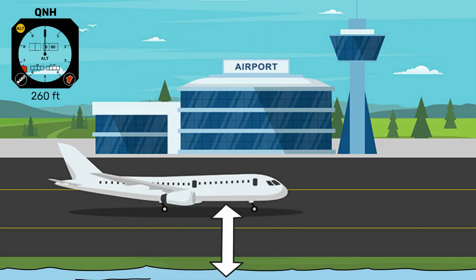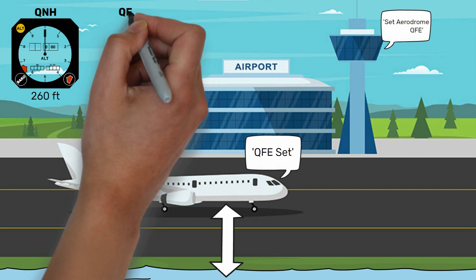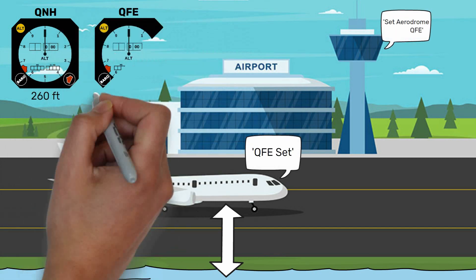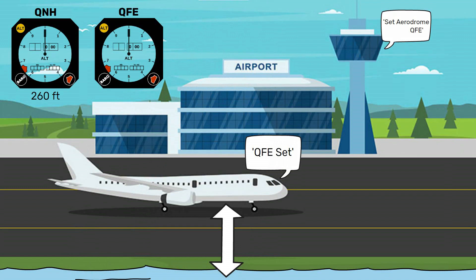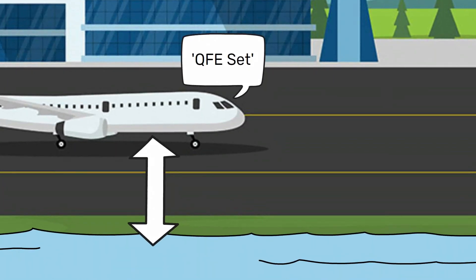If you were to remain in the same position and change your altimeter to the aerodrome's QFE, your altimeter would now read zero, as it now gives you the distance or height from you to the runway. This is how QNH and QFE differ.